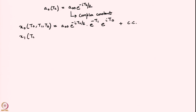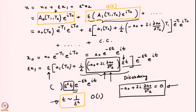Similarly, one can find x1, which equals A1(T2) · e^(−T1) · e^(iT0) plus complex conjugate. We had found this form earlier — this is basically small-a1 · e^(−T1) · e^(iT0). The second part is not there because we set it equal to zero in order to determine small a0.